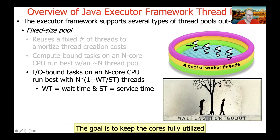When one thread is blocked on I/O, other threads in the pool can take advantage of the underlying cores, while the blocking thread is suspended by the OS kernel until its I/O completes. Conversely, if WT is very short and ST is large, the formula drives the value toward N threads. The more blocking there is, the more threads you need to achieve higher throughput.